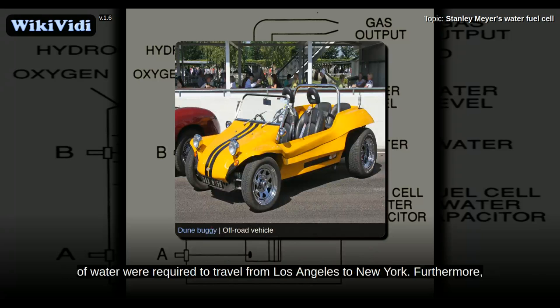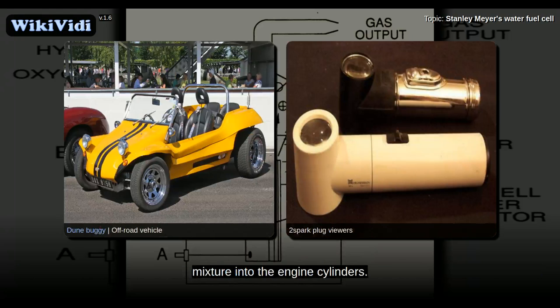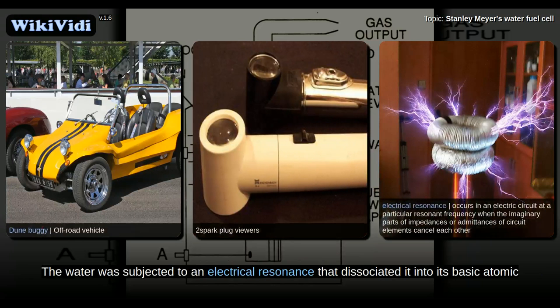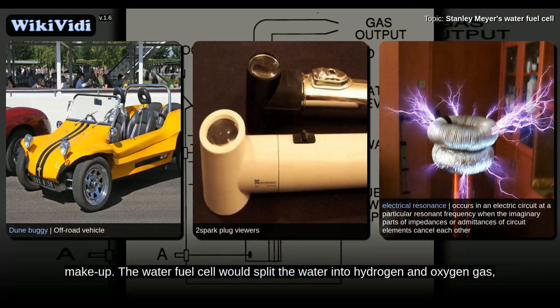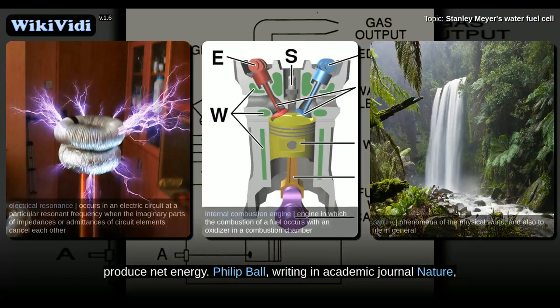Furthermore, Meyer claimed to have replaced the spark plugs with injectors that introduced a hydrogen-oxygen mixture into the engine cylinders. The water was subjected to an electrical resonance that dissociated it into its basic atomic makeup. The water fuel cell would split the water into hydrogen and oxygen gas, which would then be combusted back into water vapor in a conventional internal combustion engine to produce net energy.